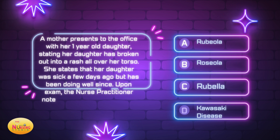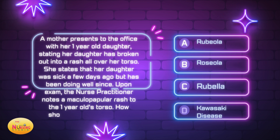The stem of the question states: how should the nurse practitioner diagnose? We have to take it back and see how they present. The mother brought the one-year-old in, states the daughter broke out into a rash all over her torso. The daughter was sick a few days ago but has been fine — no other symptoms right now, just this rash. On exam, the nurse practitioner notes a maculopapular rash. With pediatric integumentary rashes there are so many — the R's: rubeola, roseola, rubella — so knowing how to differentiate those is key.